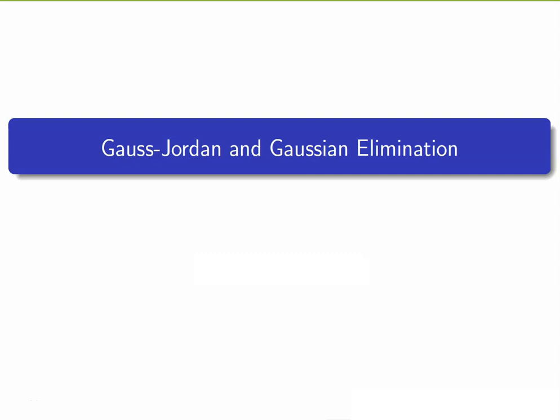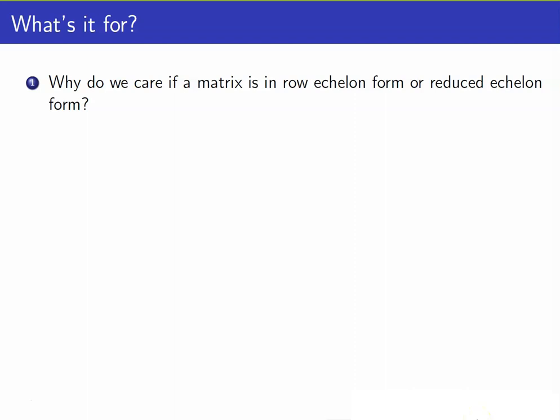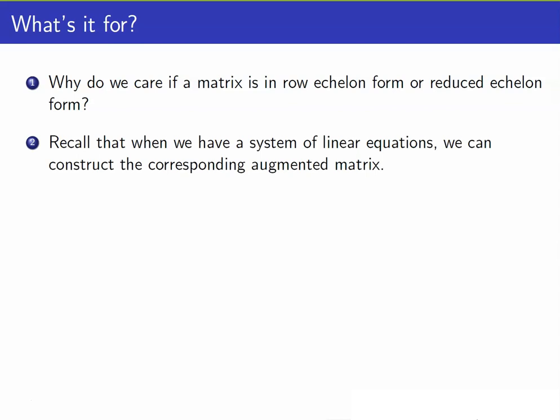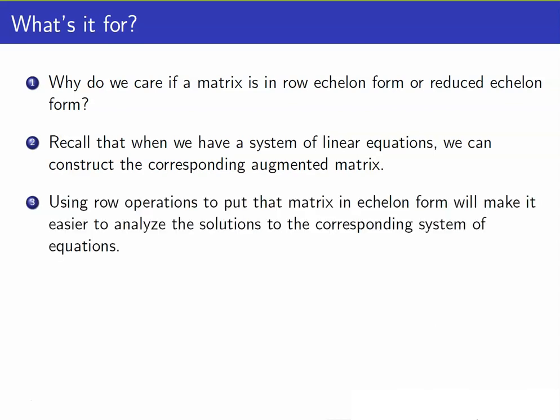In this lesson, I am going to talk about the process of solving systems of linear equations using Gauss-Jordan and Gaussian elimination. In our last lesson, we talked about reducing a matrix into its row echelon or reduced row echelon form. Why do we want our matrix to be in this form? Recall that when we have a system of linear equations, we can construct the corresponding augmented matrix. If we transform the augmented matrix into echelon form, it will make it easier for us to analyze the solutions to the corresponding systems of linear equations.